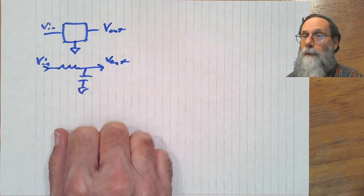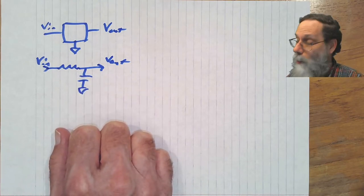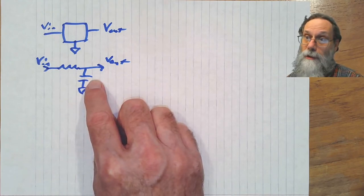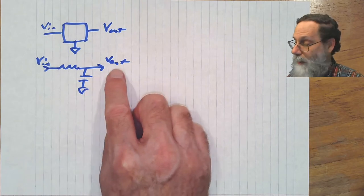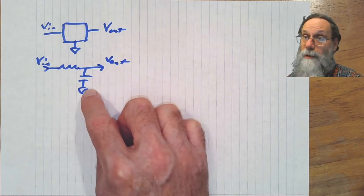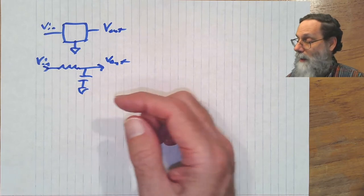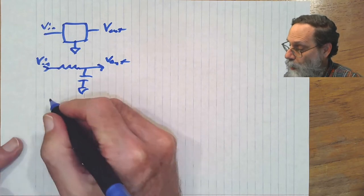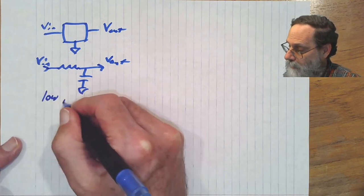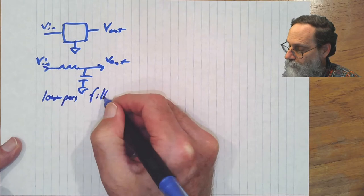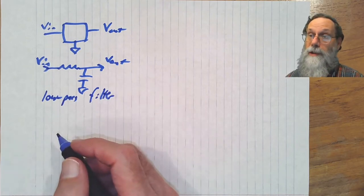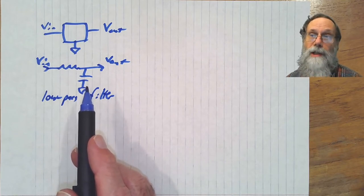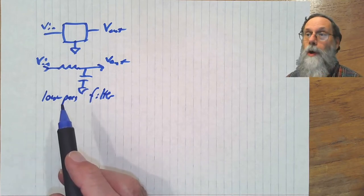What happens if we go to an extremely high frequency? Well, at a very high frequency, this capacitor is going to be basically a short circuit. So the output is basically going to be connected to ground. Output's going to be zero. That means that we can think of this as a low-pass filter. That is to say, low frequencies will go through essentially unchanged. High frequencies will be attenuated.